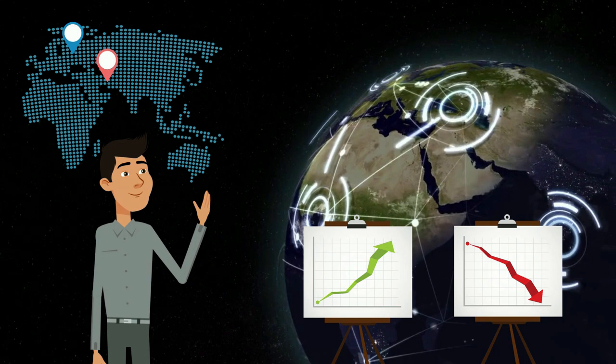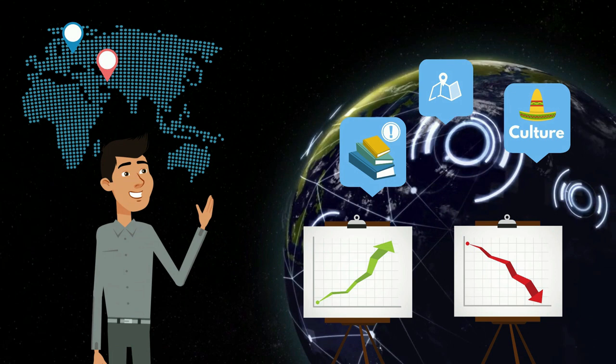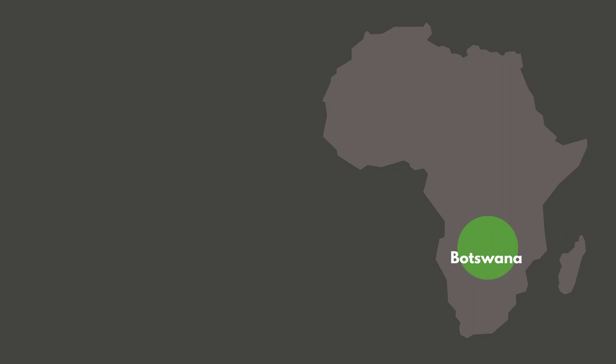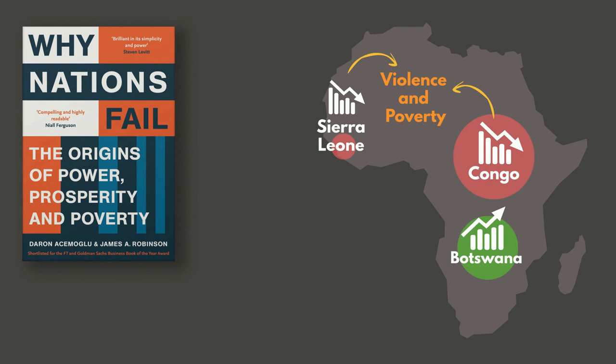Why do some nations prosper while others struggle and are plagued with poverty and greed? Some people say it has everything to do with a nation's location, culture, or lack of knowledge, but surely this can't be the whole picture. Just look at Botswana — it currently has one of the fastest increasing economies in the world, while close by, Congo and Sierra Leone are stuck in a cycle of violence and poverty.